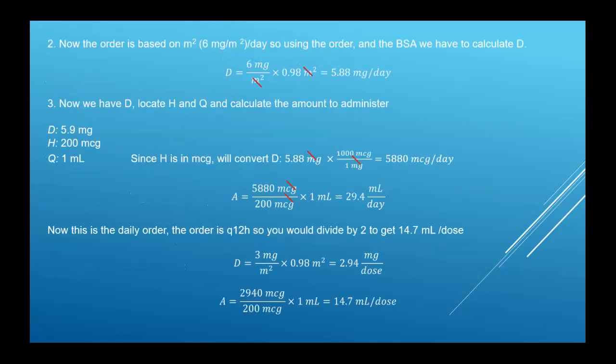So now that we know the BSA, we can calculate our D. So D was ordered as six milligrams per meter squared. Our meter squared, which is our BSA, is 0.98. So we multiply and we get 5.88 milligrams per day. Because remember it was six milligram per meter squared per day. So this is the daily order.